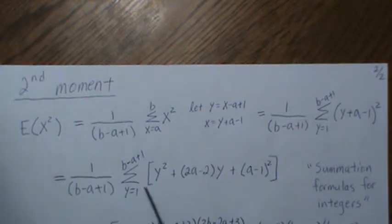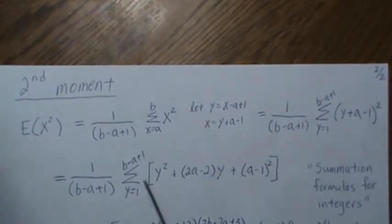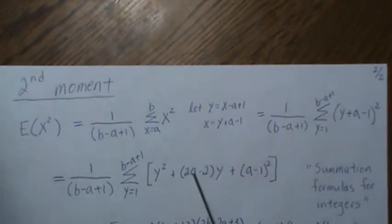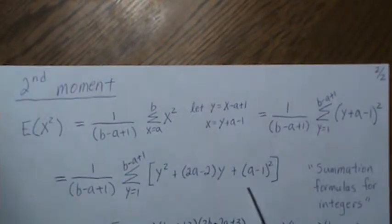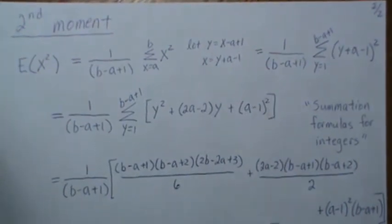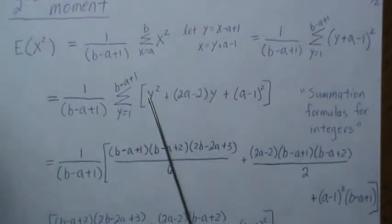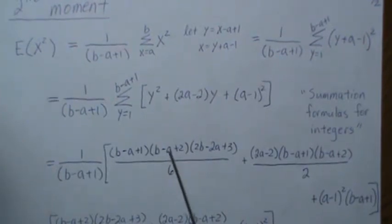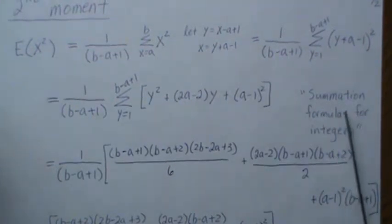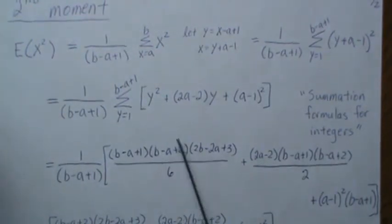Because summation is a linear operator, we can look at this piece here, which is the sum of integers squared, and then this will come out and that's just the sum of the integers, and that's a constant. And so we break it into pieces. So this becomes this piece, and again, look at this video for this formula.